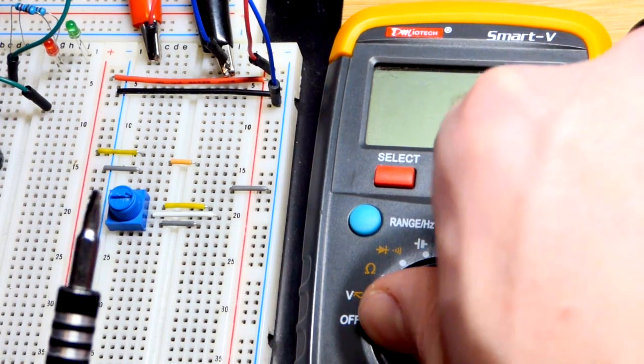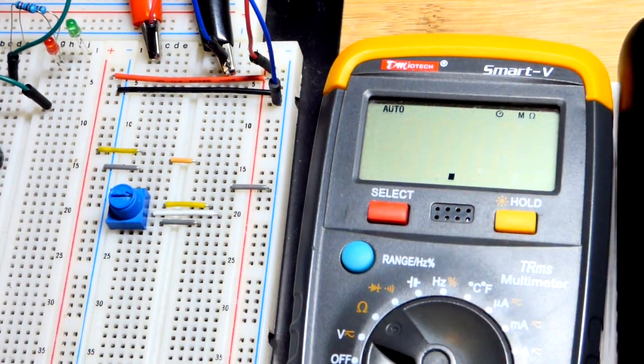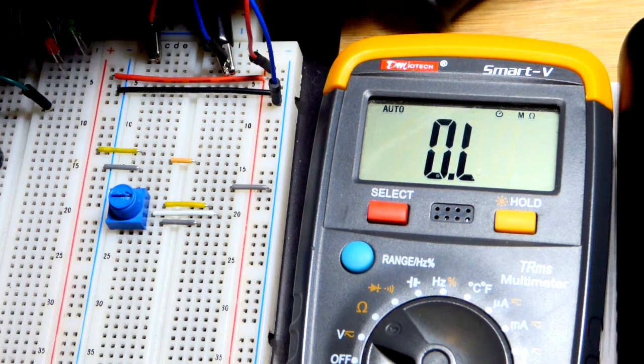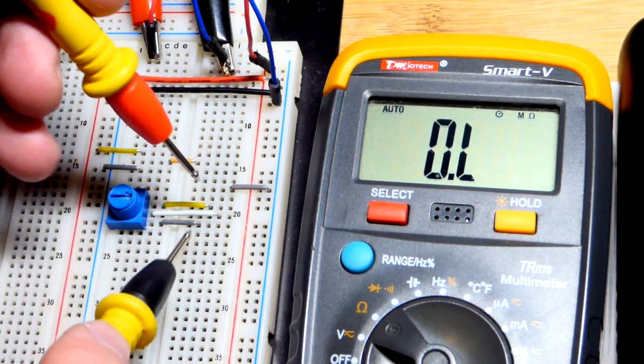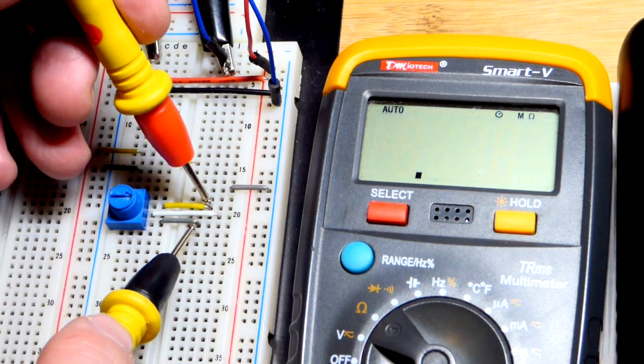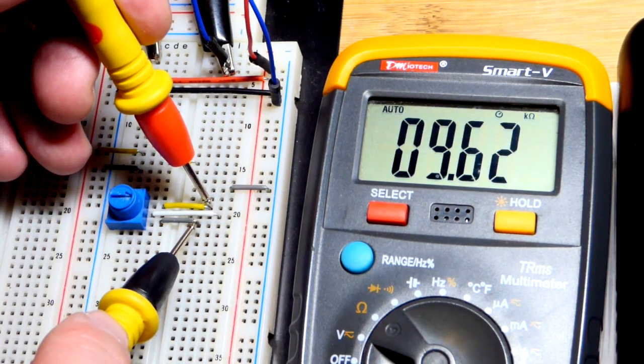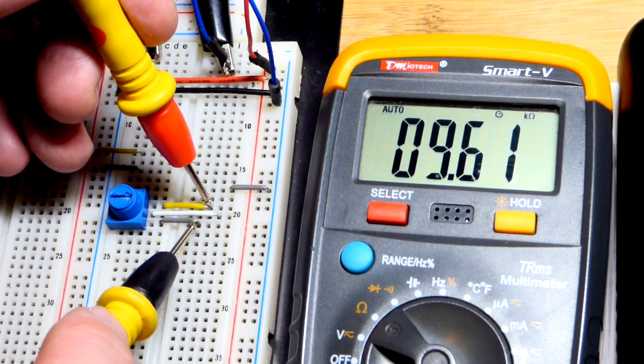As I said before, it's a 10 kilo ohm resistor, but these trim pots I find are not terribly accurate with the actual resistance from end to end. Right there, 9.6, but it's about 10 kilo ohms of resistance.